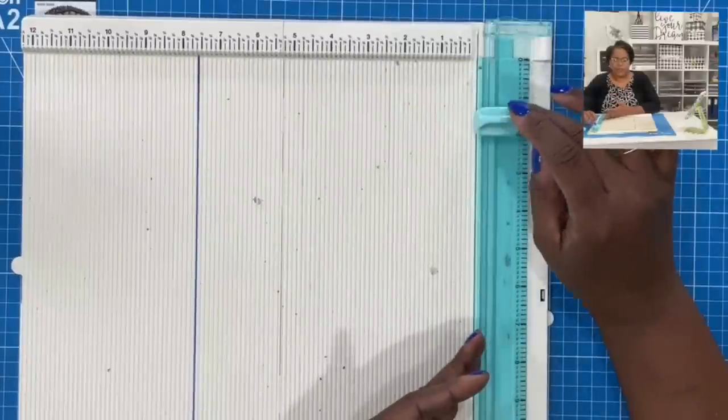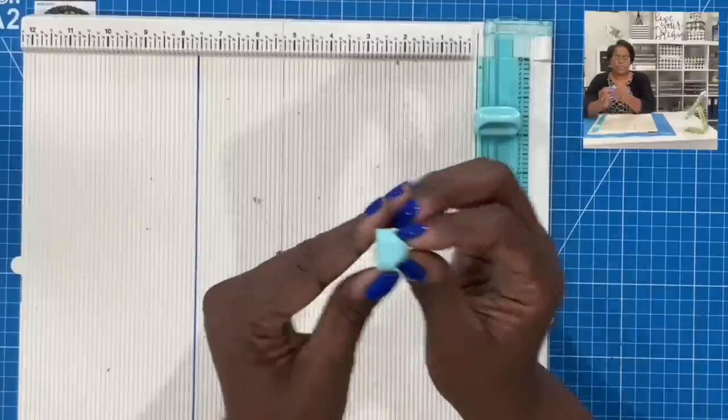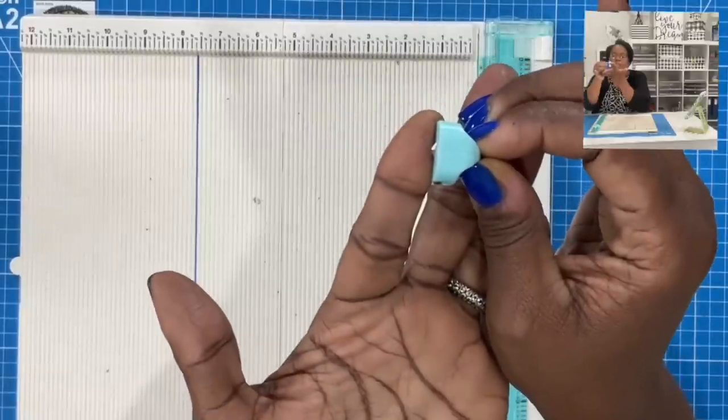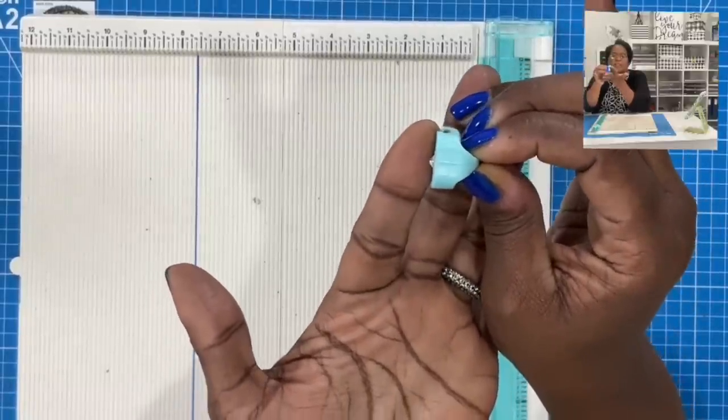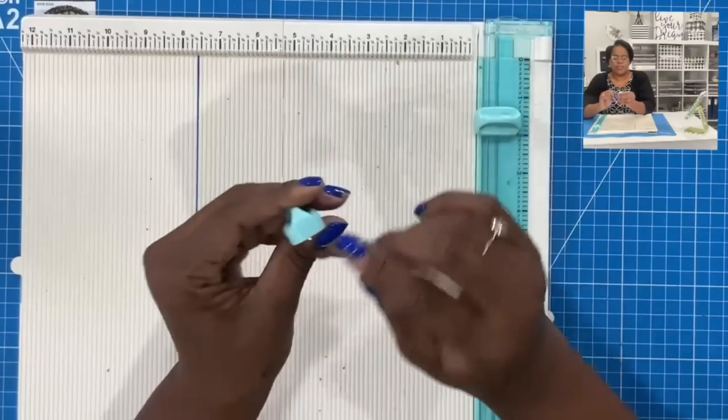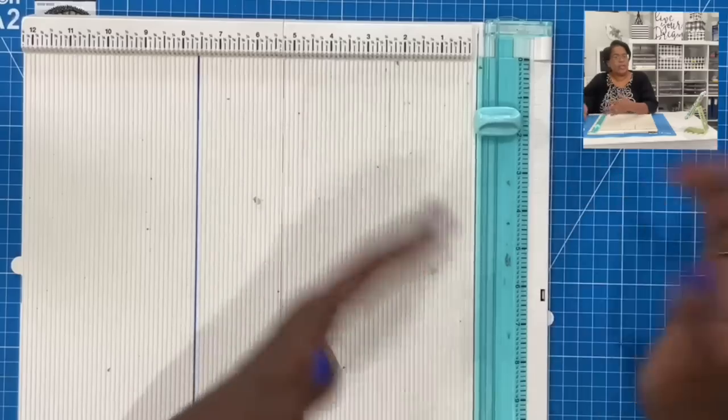All right y'all. So here's my scoreboard. And I recently changed the blade. And I'm not going to throw this blade out, but I don't know if you guys can see that blade. I'm not sure if you can, maybe you can, but you can tell when your blade is dull because the edges of your paper when you're cutting it will be ragged.